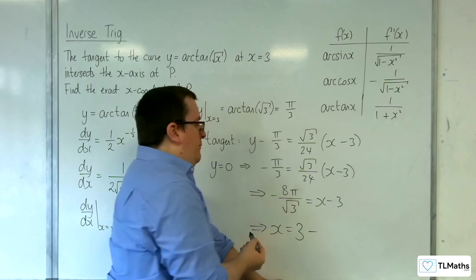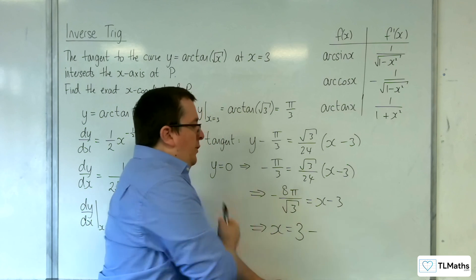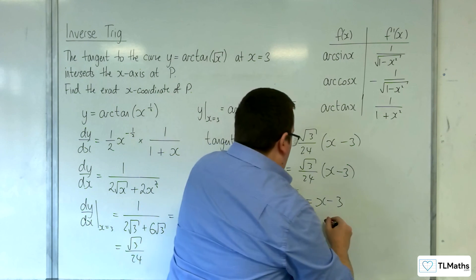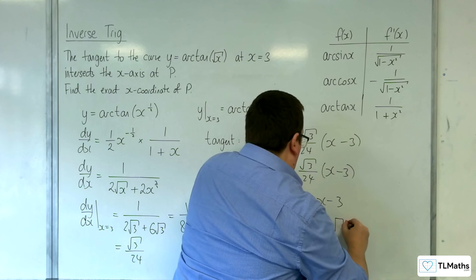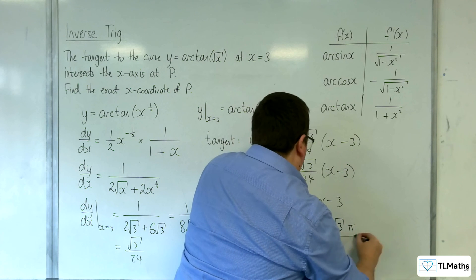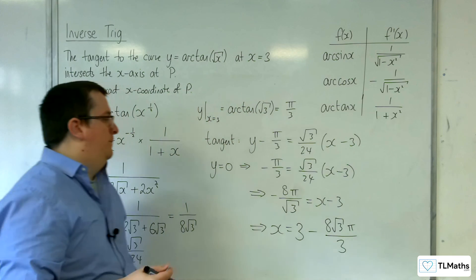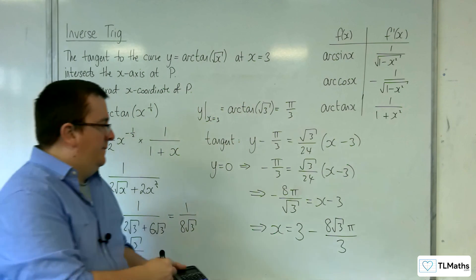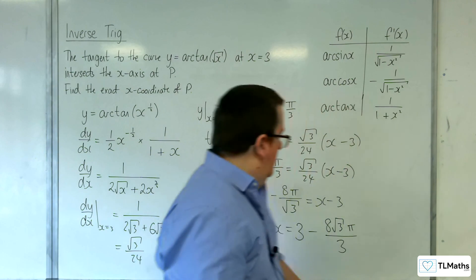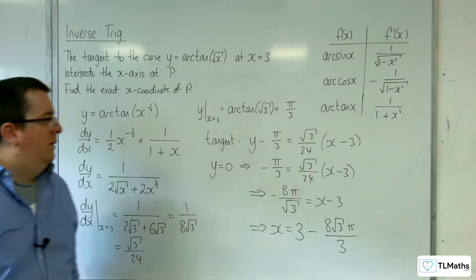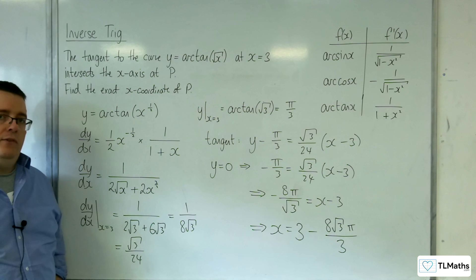Now if I multiply top and bottom by root 3, we get minus 8 root 3 pi over 3. And so that is the exact value, x-coordinate, of where this tangent line will cross the x-axis.